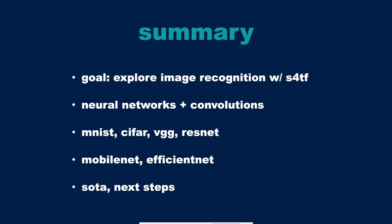We'll look at the problem of image recognition as a single problem, through the lens of Swift for TensorFlow. We'll look at neural networks and convolutions and how they can be used together to solve this problem. From there we'll look at simpler versions like MNIST and CIFAR, and then build upon that base to tackle problems like VGG and ResNet, which are full-blown ImageNet-level image recognition networks. Then we'll look at the MobileNet family and the research leading up to EfficientNet, which is pretty close to the current state-of-the-art.